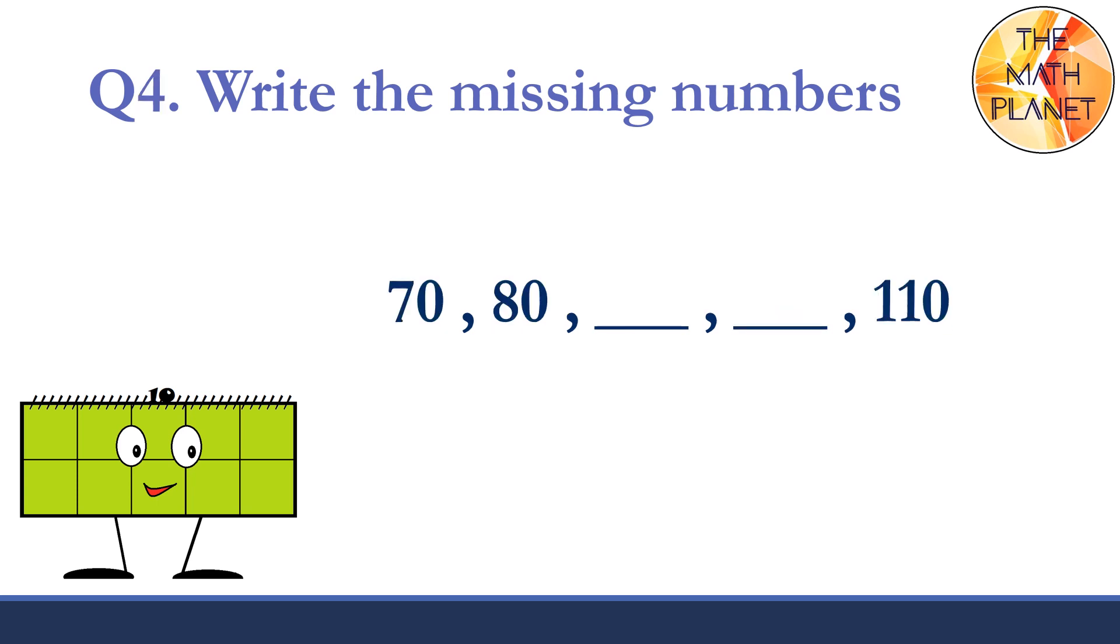Question four. Write the missing numbers. Seventy, eighty. So, the next number will be ninety, and then one hundred, then one hundred ten.